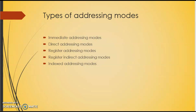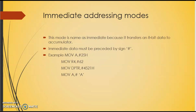Starting with the first one — immediate addressing mode. In this mode, the source operand is a constant. Whatever source operand value we are giving is immediate data. Immediate data must be represented by the hashtag symbol (#). We use this hashtag to identify immediate addressing mode.